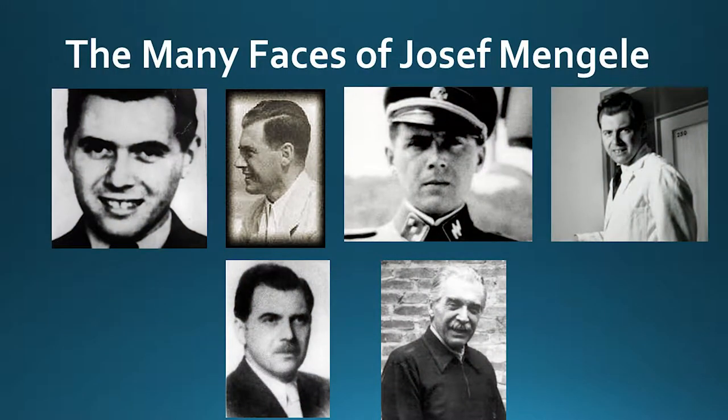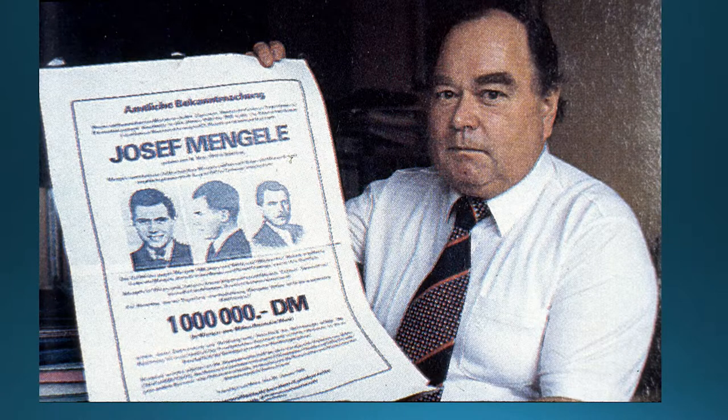Pictures show Mengele as a young man in Berlin, and then as he changed all the way to the last picture with a mustache taken in São Paulo. There was a reward of a million Dutch marks for his capture. After he had an accident at the beach, he died — they say he probably suffered some sort of attack there, though I don't know because no autopsy was performed. As a pathologist, I can only be certain if an autopsy is done. They said he drowned.